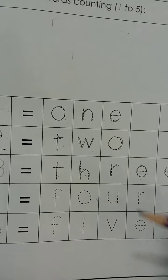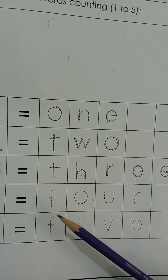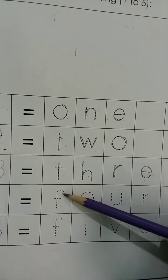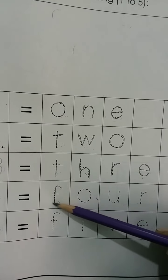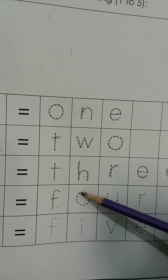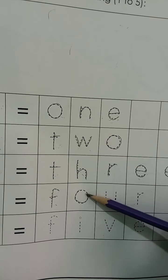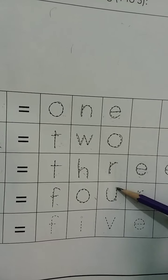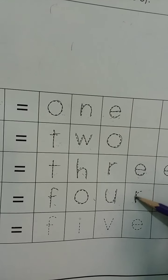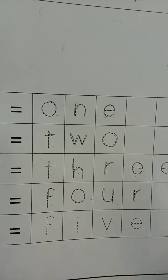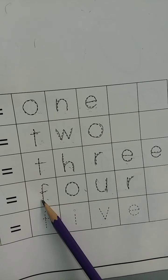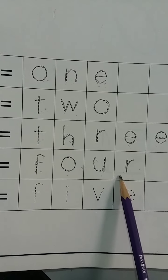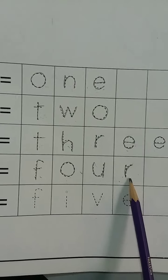Now trace 4. Kids, read with me: F, O, U, R, 4. Press F like this. Now press O like this. Press U. Press R. Kids, read with me: F, O, U, R, 4.